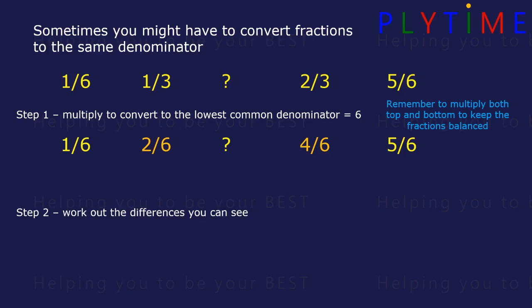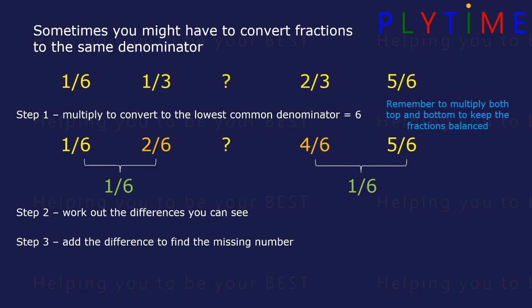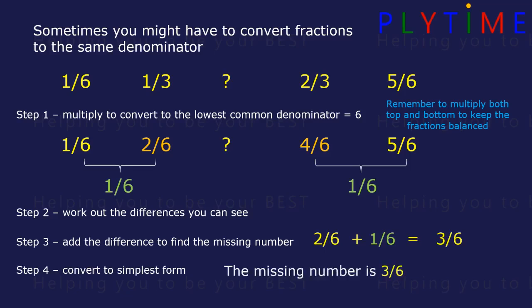Now we can work out the differences we can see. Between 1 sixth and 2 sixths is 1 sixth, and between 4 and 5 sixths is 1 sixth. Then we add the difference to find the missing number. So 2 sixths plus 1 sixth is 3 sixths. Can we convert it to a simpler form? If we divide the top and the bottom by 3 we end up with 1 half.